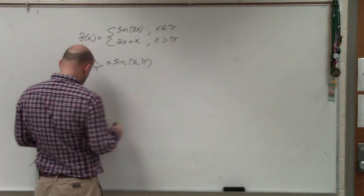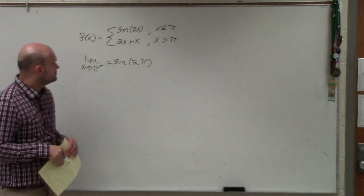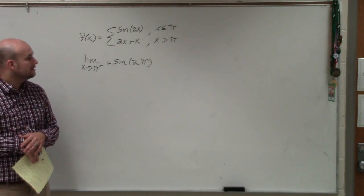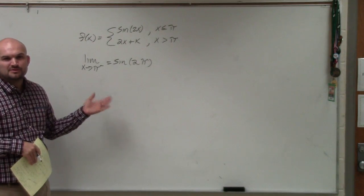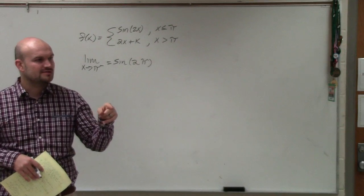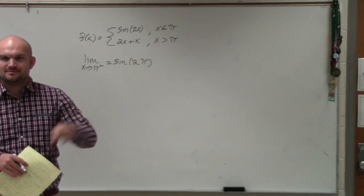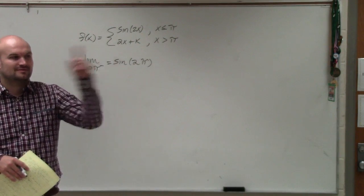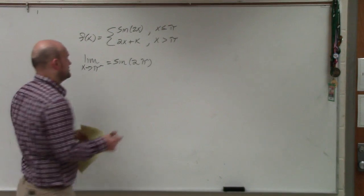If you remember, 2π is all the way around the circle. Sine would represent the y coordinate, so the y coordinate at going all the way around would be 0. So that's equal to 0.